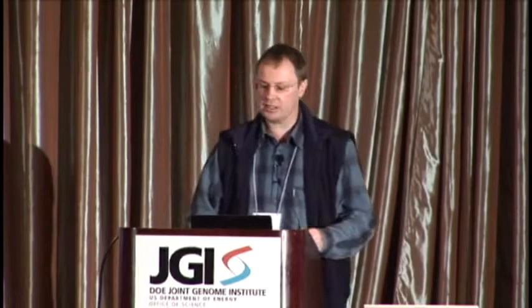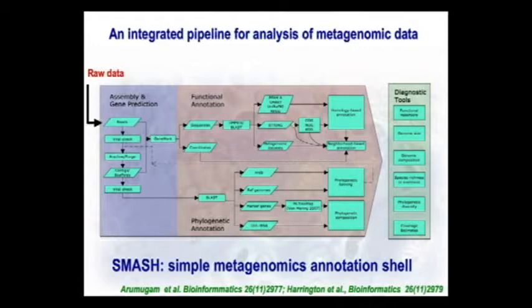Our workhorse at the moment is called Smash. It's a tool — not a web server, you can download it and pipe your own data through. It's not the simplest tool, but it has lots of functionality. We have two flavors: one for single-cell analysis and one for metagenomics. What also came with this new kind of data is that lots of visualization tools had to be developed. You have to be able to zoom in on spatial and temporal resolution, which is just emerging.